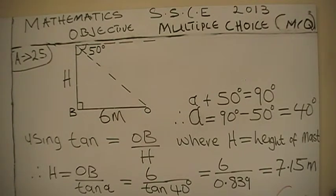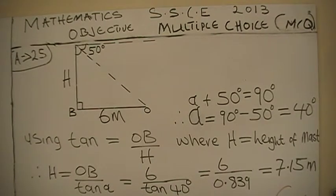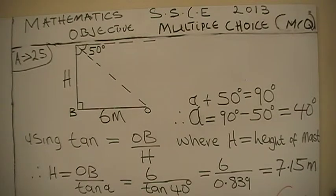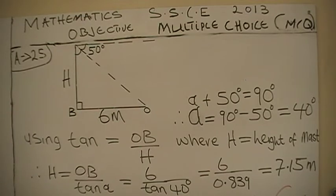Using tan equals OB over H, where H equals the height of the mast which is described by the diagram. Therefore, H equals OB, which is 6 meters, all over tan alpha, equals 6 all over tan alpha.